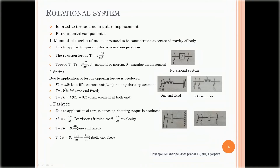Next is the rotational spring. Due to the application of torque, the spring is twisted by angular displacement theta, and the spring produces an opposite torque C_K. For a one-ended spring, C_K equals K·theta, so the total applied torque T equals K·theta. When both ends are free, the total applied torque T equals K·(theta1 minus theta2), meaning both angular displacements must be considered.